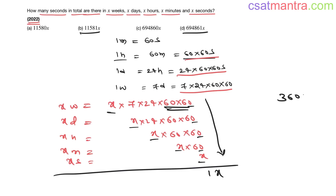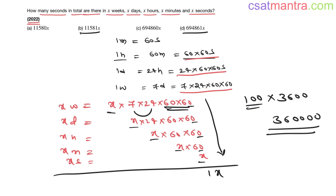60 into 60 is 3600, 7 into 24 is around 168 — it's more than 100. If you take 100, you'd be getting around 360,000, but one of the options only has 11,000, so that cannot be our answer. By approximation, you need not find the exact value.